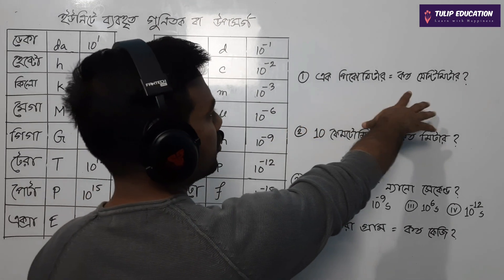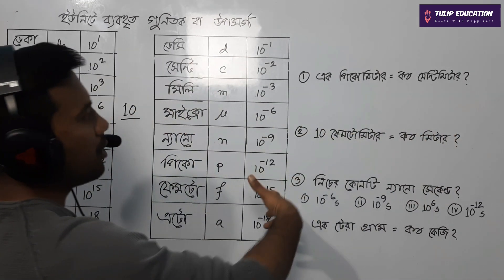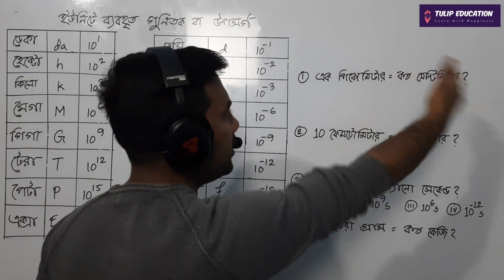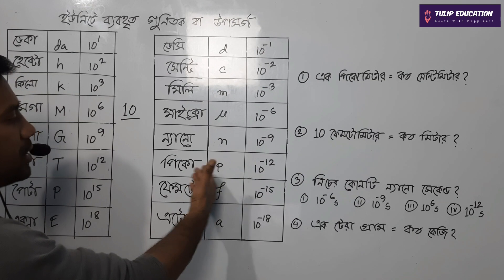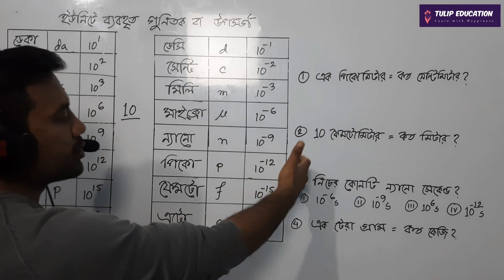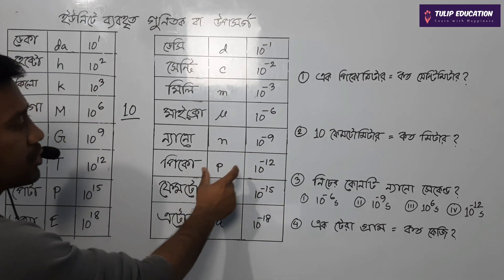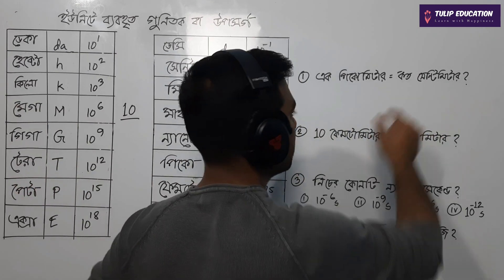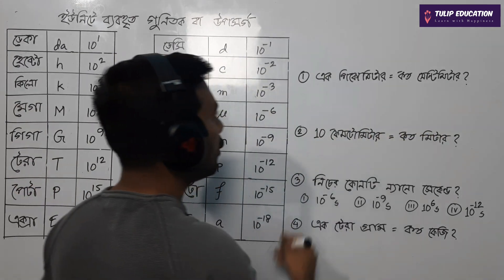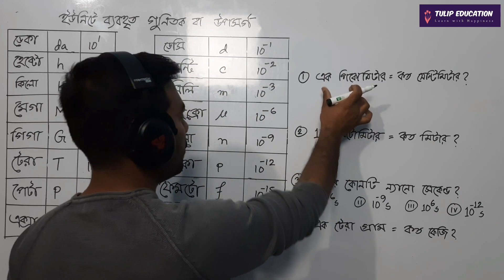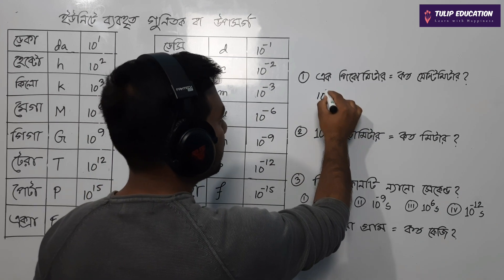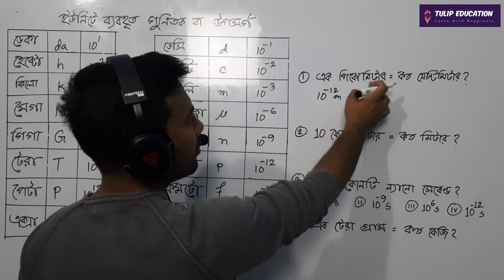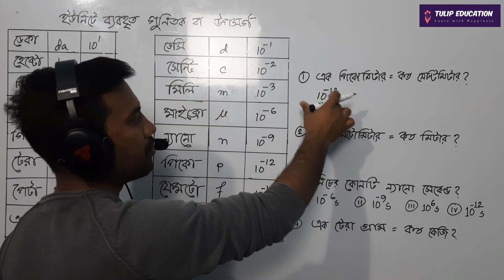10 to the power of minus 12. Half of a centimeter — we were directly talking about 100 meter, because 100 meter equals 10 to the power of minus 12 meter. So we are going to learn about 10 to the power of minus 12 meters.